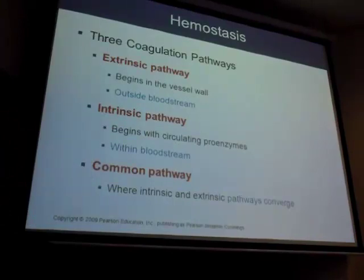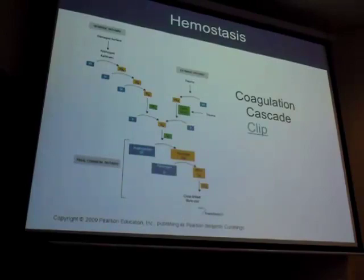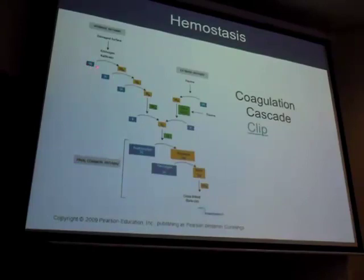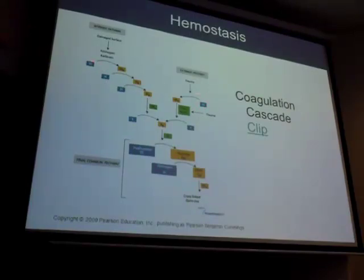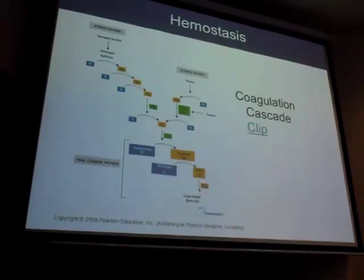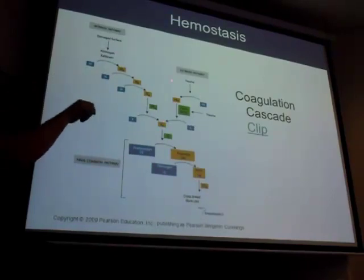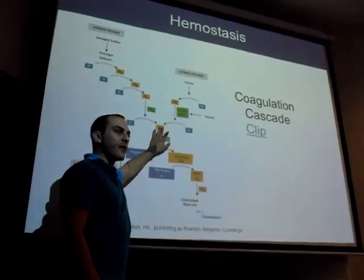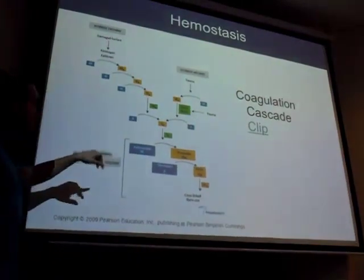The intrinsic and extrinsic pathways converge in the common pathway starting at factor X — factor 10. The intrinsic pathway starts at factor XII (12), which activates XI, then IX, et cetera. The extrinsic starts at factor VII (7). They meet at factor X. I don't need you to worry about each individual factor number — just know what happens starting at factor 10 in the common pathway.